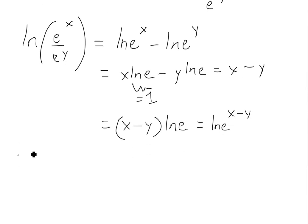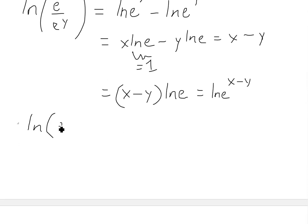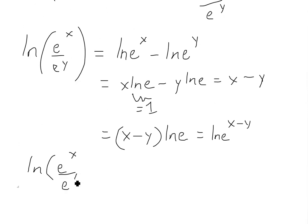So we could write this as equaling ln e to the x minus y right here. So now we have ln of e to the x divided by e to the y equaling this part right here, which is ln of e to the x minus y.